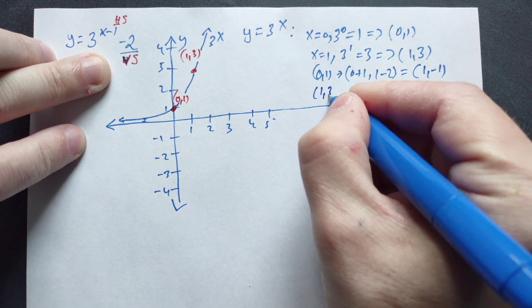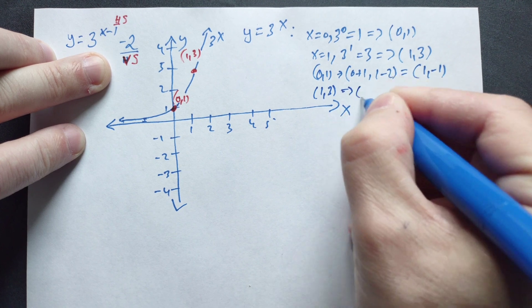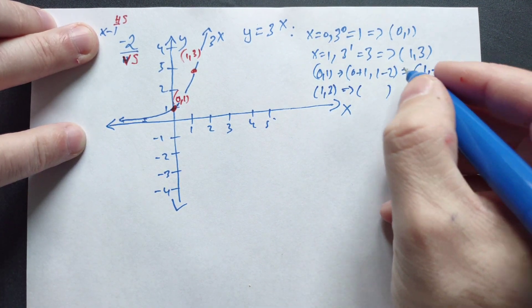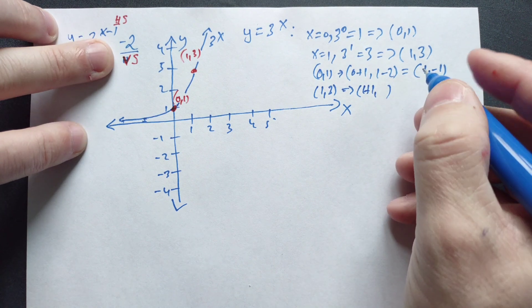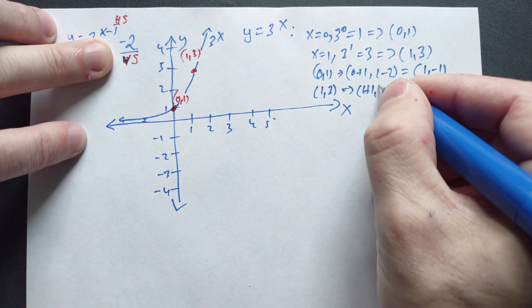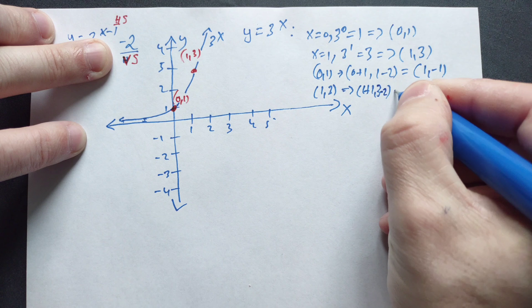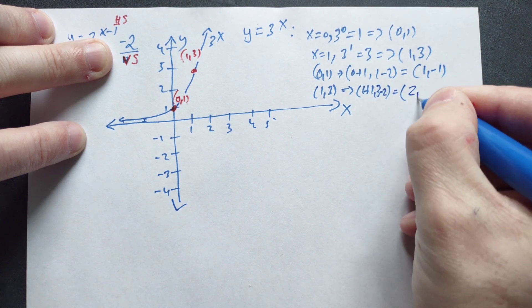Take the point 1, 3, and then simplify that according to what this says. You're going to add 1 to the x, so it's going to be 1 plus 1. And then this says subtract 2 from the y, so you're going to have 3 minus 2. And simplify that, so it's 2 comma 1.